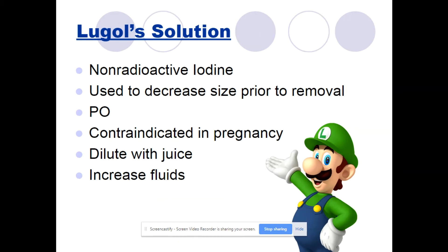Lugol's solution is a non-radioactive iodine used to decrease the size of a goiter or the thyroid prior to removal. It can also be given after removal to control signs and symptoms until radiation effects take place. It is given PO, is contraindicated in pregnancy and lactation, and we dilute it with juice and increase fluids to move it through the system faster.